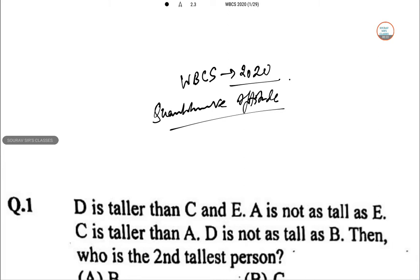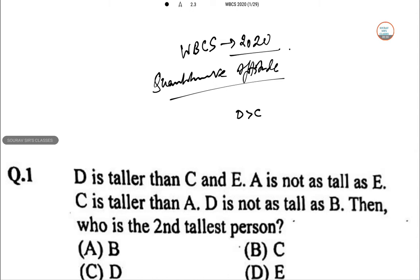So D is taller than C and E. In this kind of questions D is taller than C and D is taller than E separately. But there is no relationship between C and E from the first part. A is not as tall as E, so E is taller than A.